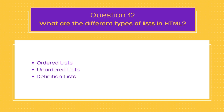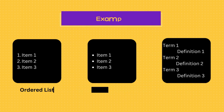An unordered list is a list of items that is not numbered — each item is preceded by a bullet point by default. Then comes the definition list: a list of terms and their definitions, where each item consists of a term followed by its definition. Let's see examples of the ordered list, unordered list, and definition list in the example here.